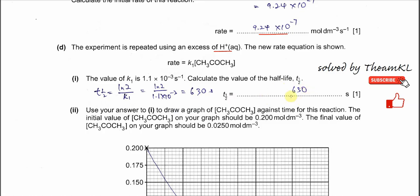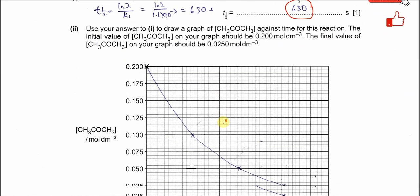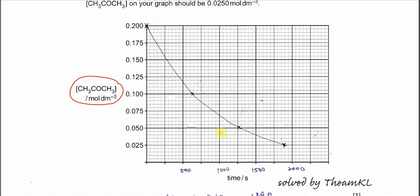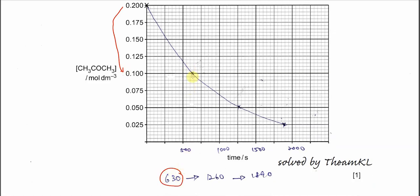Part D(ii): draw a graph of propanone concentration against time. The initial concentration is 0.2 mol dm⁻³ and the final value is 0.025 mol dm⁻³. Because it is first order, the graph should be a curve. First, plot the first half-life: concentration reduces from 0.2 to 0.1 mol dm⁻³ at t = 630 seconds.